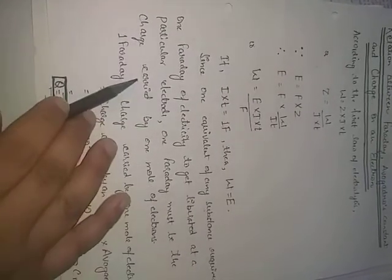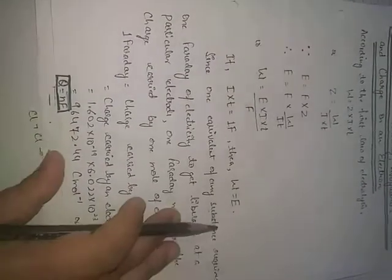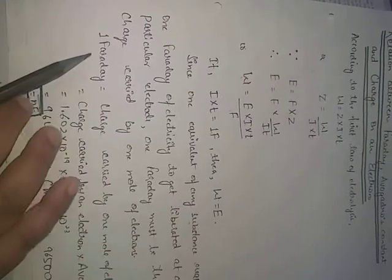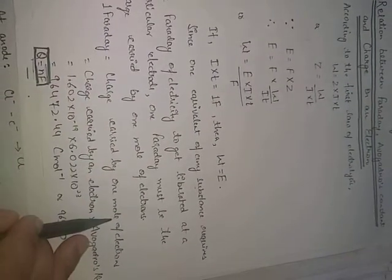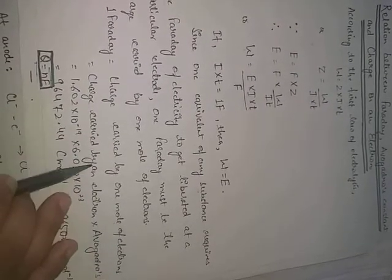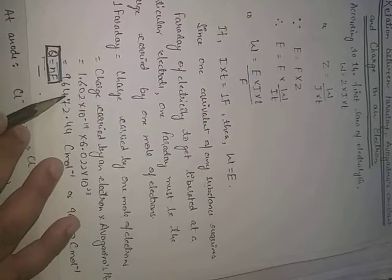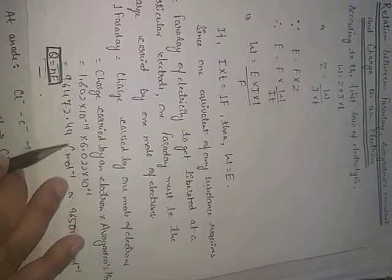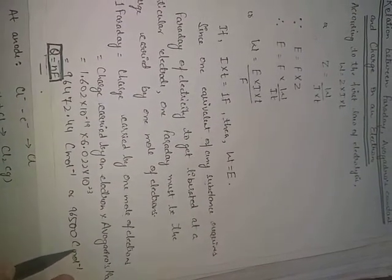One Faraday equals the charge carried by one mole of electrons — that is, the charge on one electron multiplied by Avogadro's number — which comes out to 96472.44 coulombs per mole, approximately equal to 96500 coulombs per mole. This is equal to one Faraday.